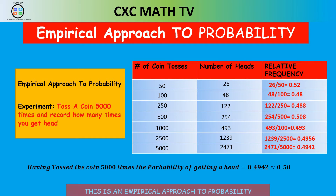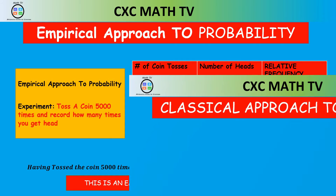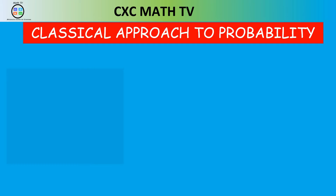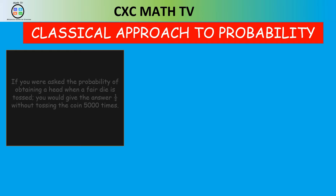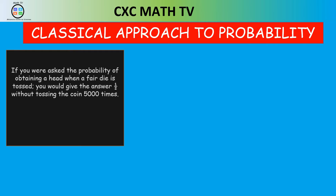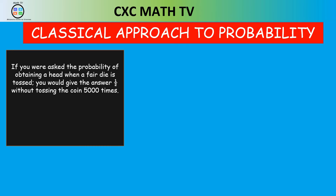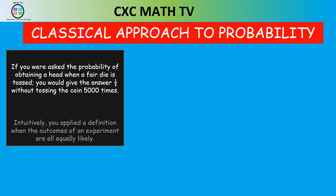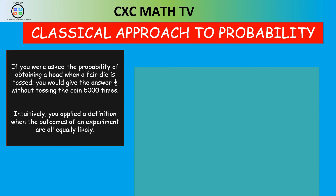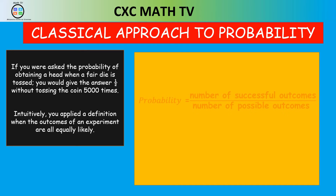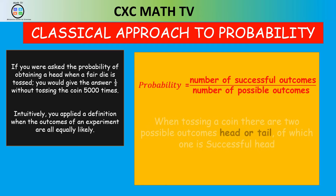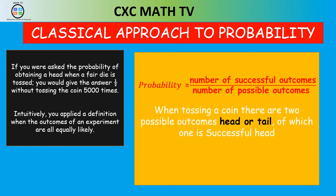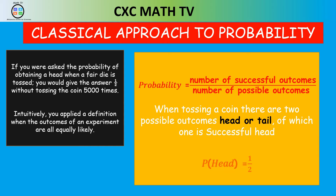This is known as an empirical approach to probability — we actually conducted an experiment to get the likelihood of an event occurring. The next way is the classical approach. If asked the probability of obtaining a head when a coin is tossed, intuitively you'd say one-half, since there's an equally likely outcome of getting either a head or a tail. Probability is the number of successful outcomes over the number of possible outcomes.